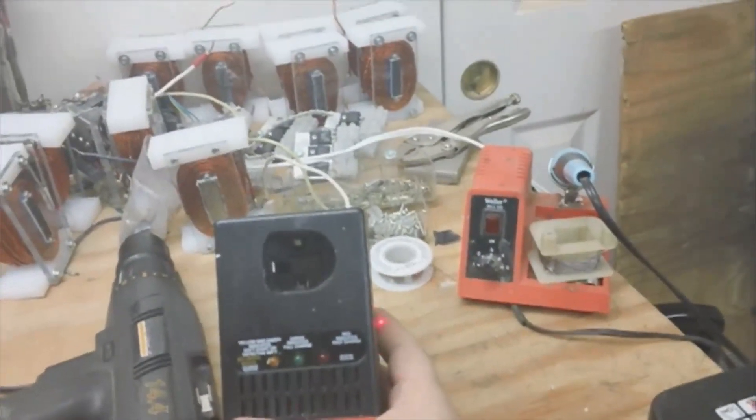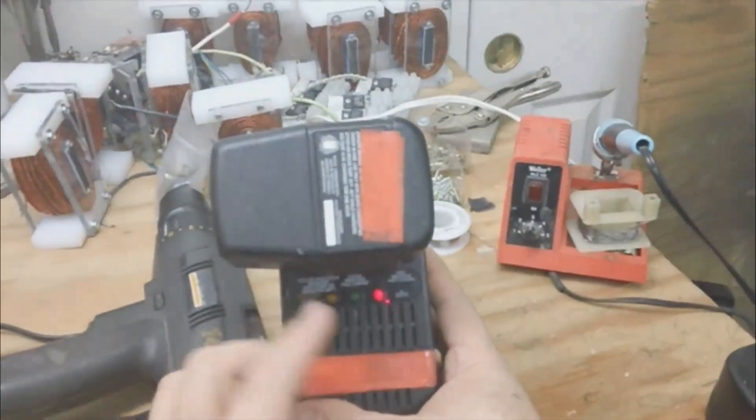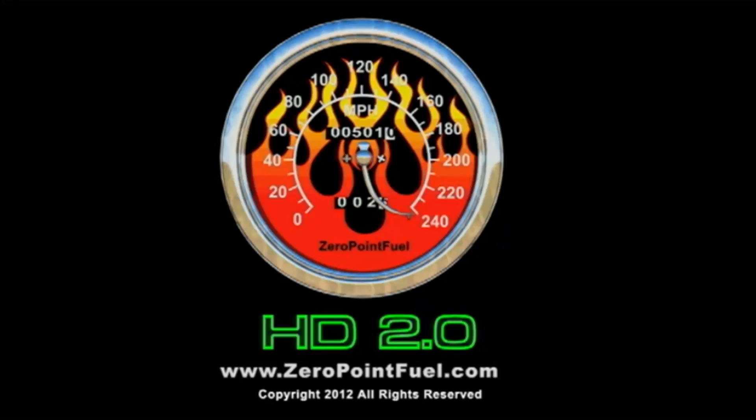Now, because it climbs so fast right there, I'm pretty sure I've corrected the battery. So there you go. This is Technomancer for Zero Point Fuel, signing out.